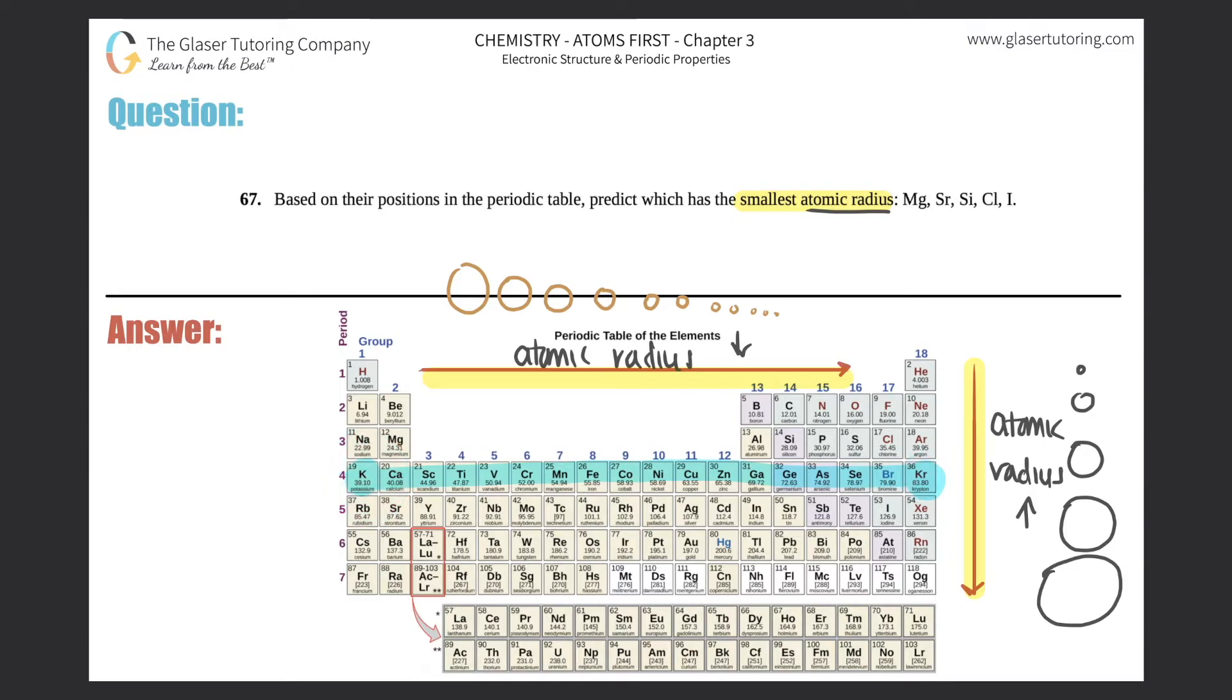Now let's look at where these elements are on the periodic table: magnesium, strontium, silicon, chlorine, and iodine. I do this by process of elimination—they want the smallest one, so I'd automatically get rid of the ones that are large. As I go down a group, atomic radius increases, so strontium would not be the smallest and iodine would not be the smallest.